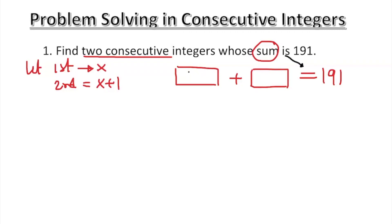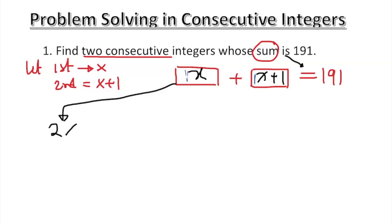So x is the first one — I'm going to fill that in. x plus one is the second one. Now, x plus x plus one: there are two x's, each with an invisible coefficient of one, so you have two x plus one left over, equal to 191.